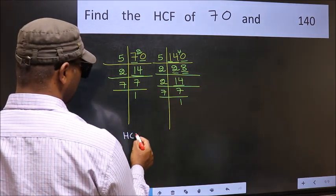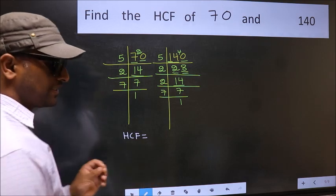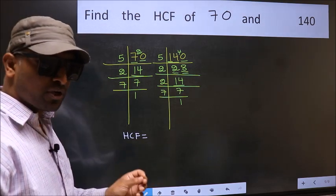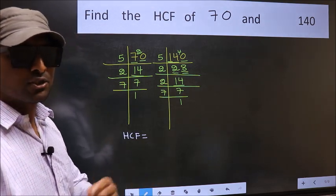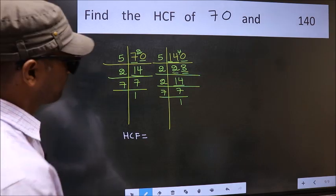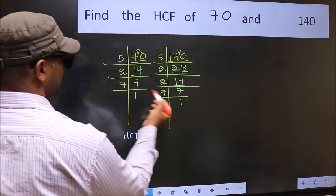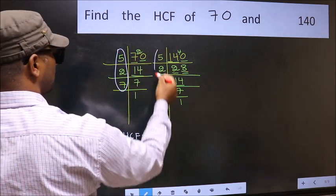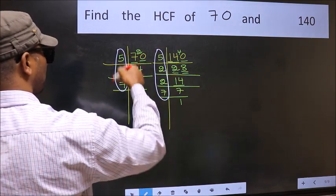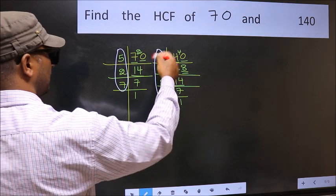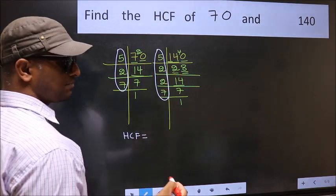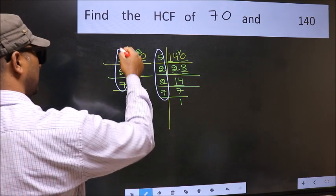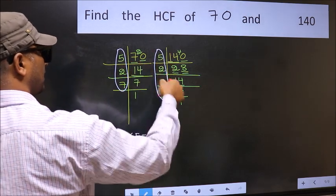Therefore, our HCF is the product of the numbers which should be present in these two places—that is here and also here. Here and here. So now let us find the numbers which should be present here and here.